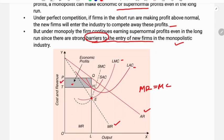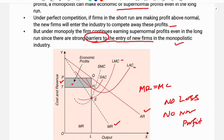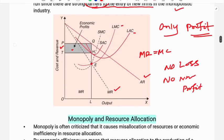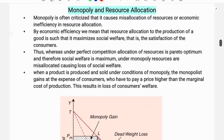In the long-run there will not be any loss or normal profit. This is the long-run equilibrium of the monopoly market. Next we will see monopoly and resource allocation.